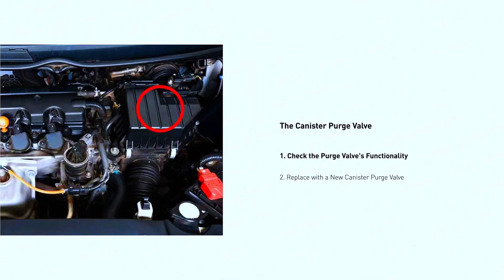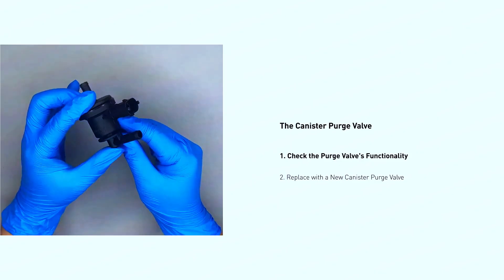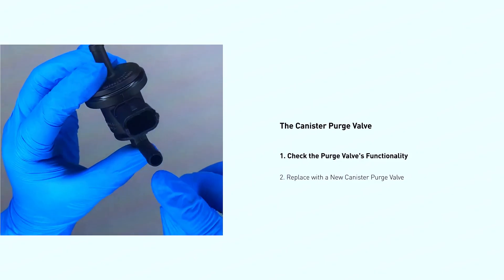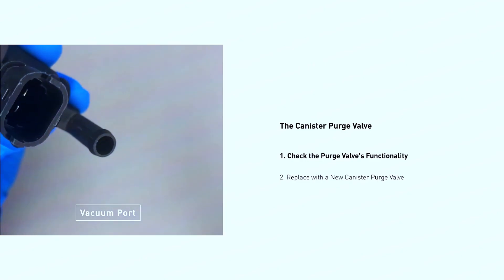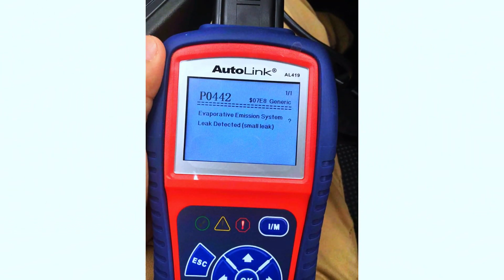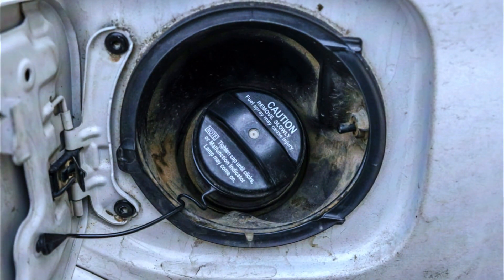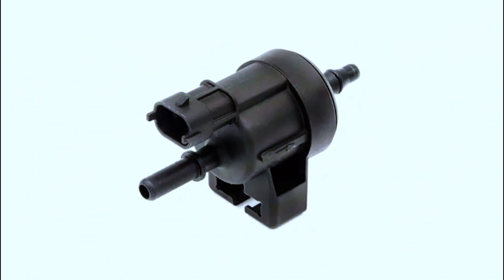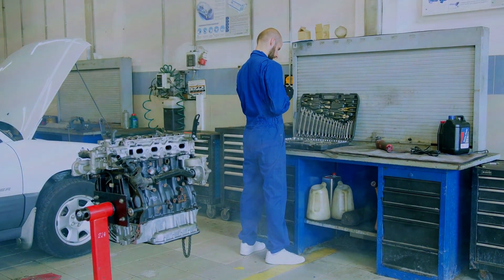For replacing the purge valve: locate the purge valve, usually near the engine intake manifold. Disconnect the electrical connector and any vacuum lines, then unscrew and remove the purge valve. Install the new purge valve and reconnect everything. Clear the trouble code with your OBD2 scanner. If the gas cap isn't the problem, it might be the purge valve itself — this fix requires a bit more work, so if you're not comfortable doing it yourself, take your car to a mechanic.